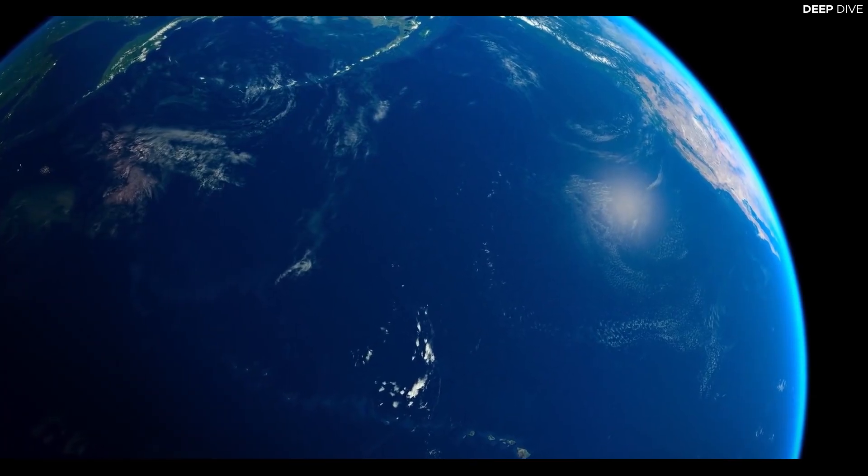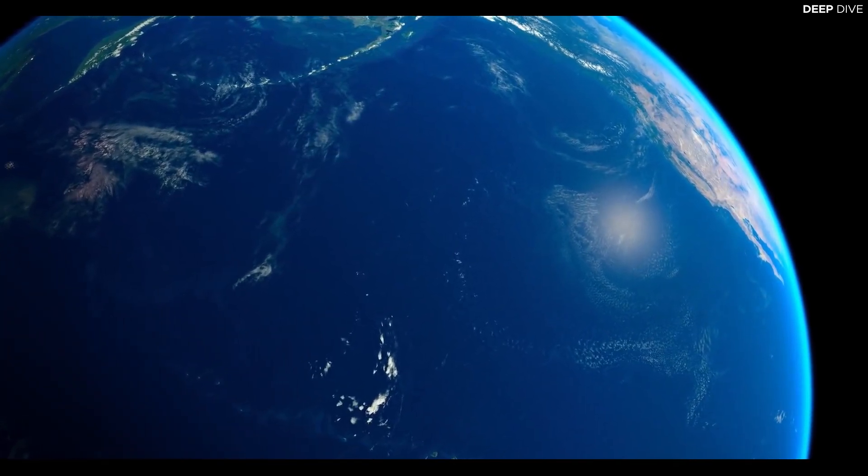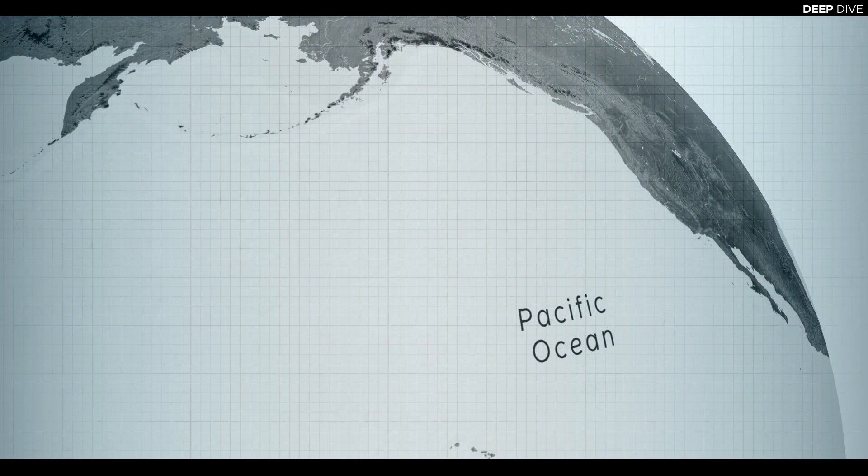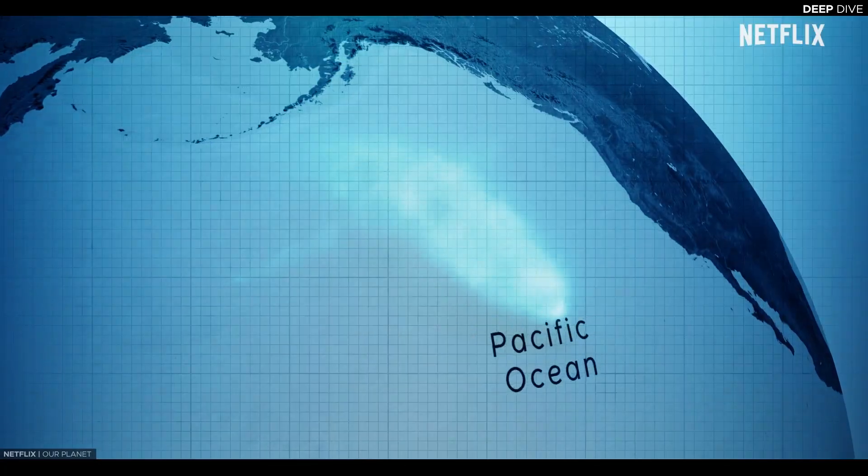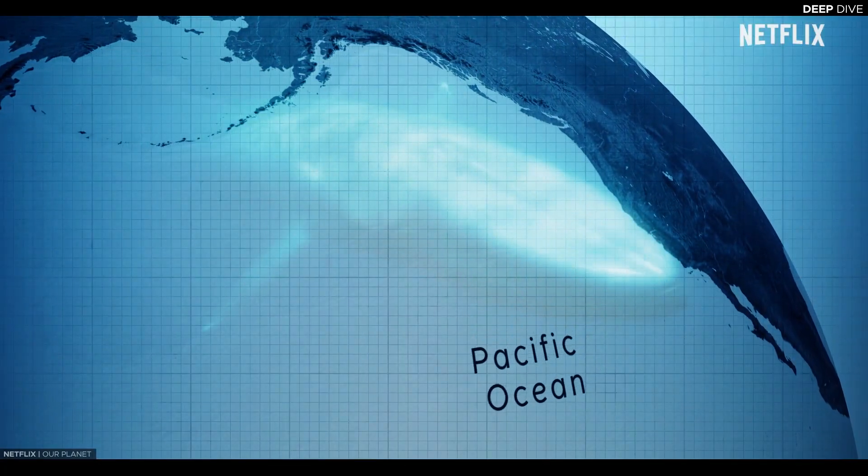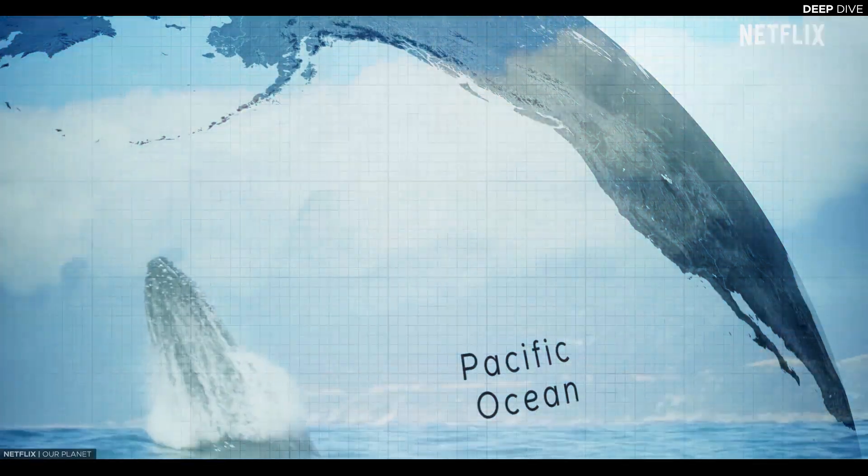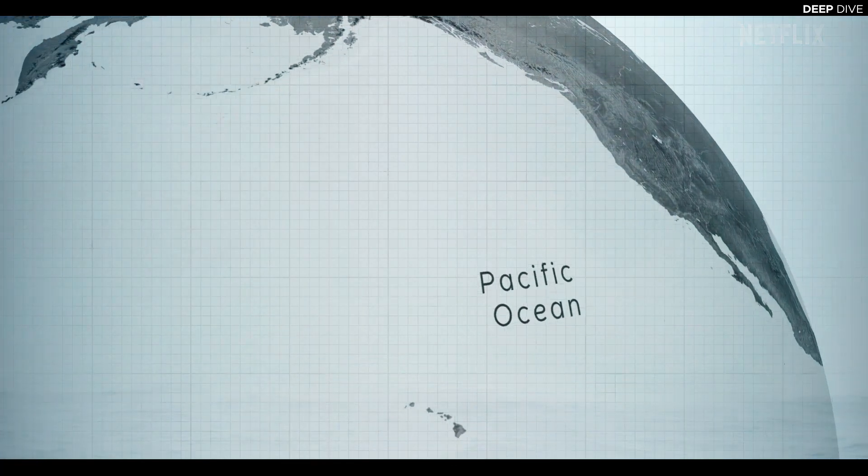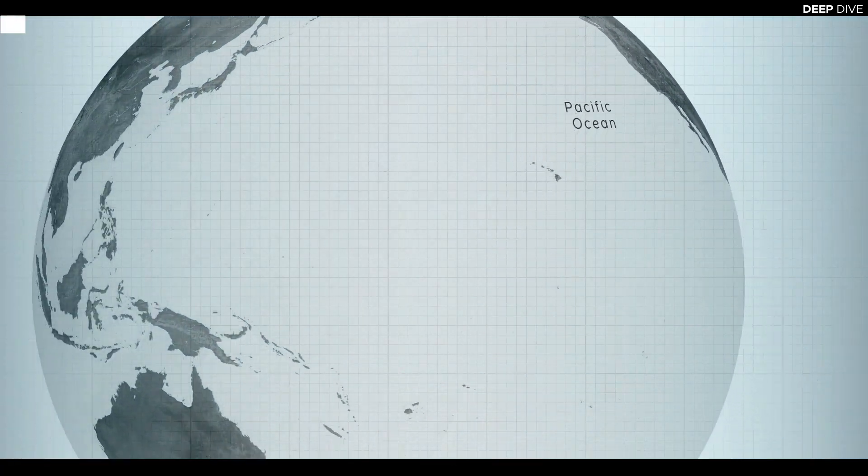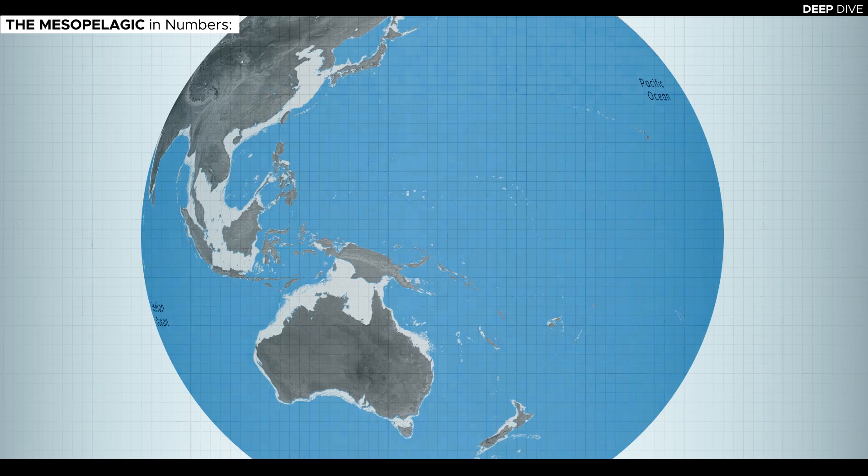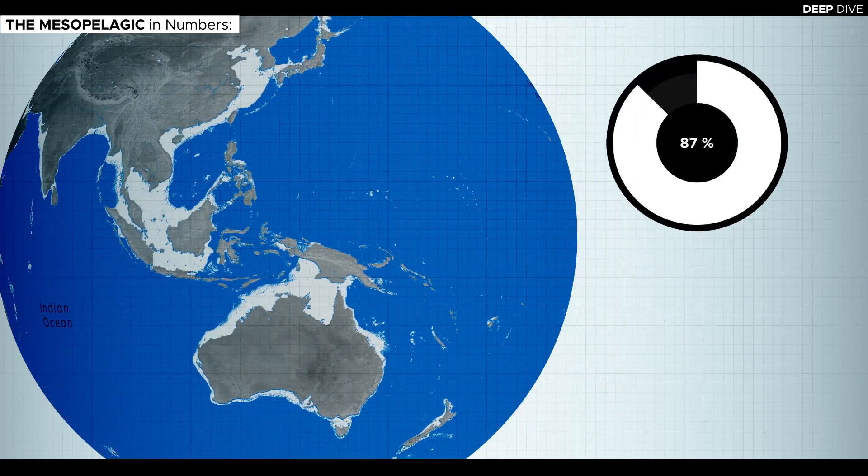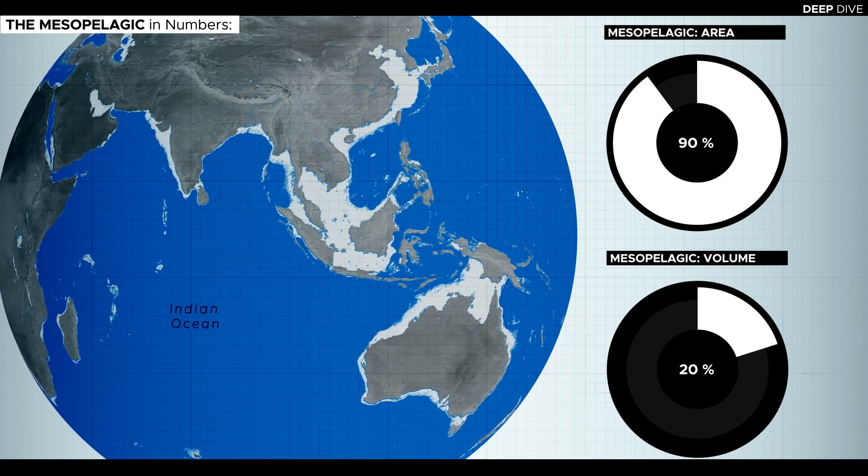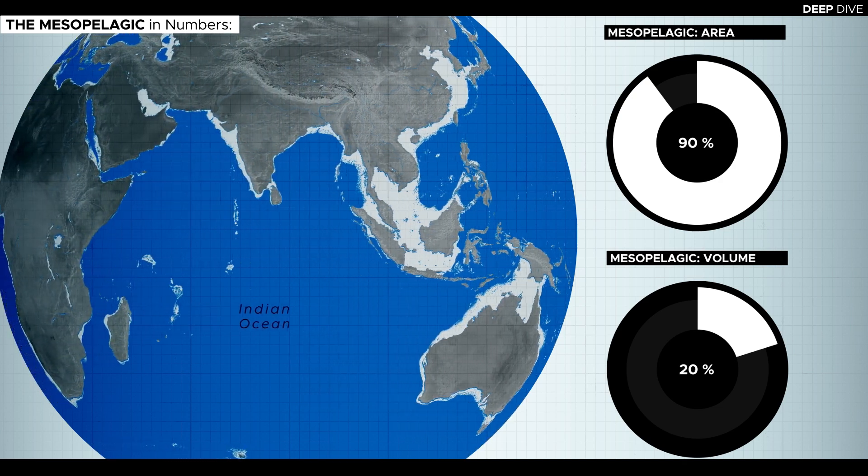The open ocean was long thought to be a watery desert that as opposed to the rich and productive coastal regions above the continental shelves where life is flourishing, is mostly devoid of life and only inhabited by a few nomad species that roam the vast emptiness of the high seas in search of the occasional patches of productivity. And while this might be true on the surface, exploration of the deeper parts of the ocean has revealed an ecosystem of incredible abundance and diversity. Given that the mesopelagic comprises about 90% of the ocean's surface and 20% of its volume, it is one of the largest ecosystems in the world and an enormous reservoir of unexploited resources.